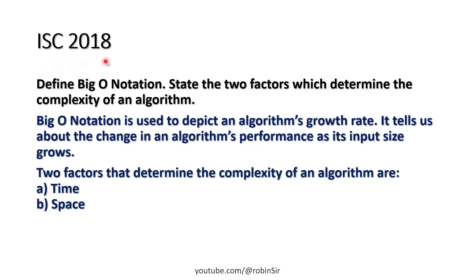Year 2018. Define Big O notation. I have already given the definition. State two factors which determine the complexity of an algorithm. So the two main factors are time and space. We check the performance of an algorithm on the basis of time, how much time it takes to solve a given problem, and how much space it occupies in the computer's memory to solve that problem.